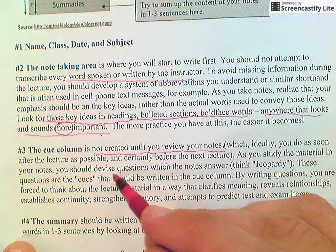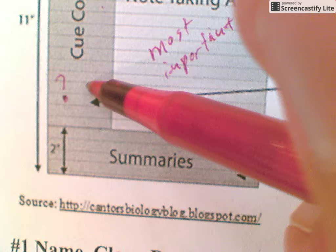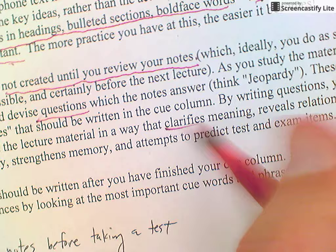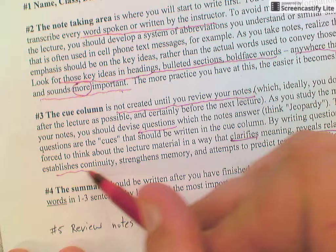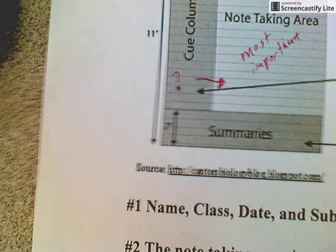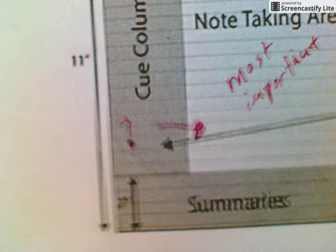As you go back through the notes, you come over to the cue column and write your questions. I might draw a little arrow to where the question relates in the notes. You might also have anything that clarifies the meaning, reveals relationships between the notes, establishes continuity with the notes, or strengthens your memory. You can also use the cue column for predicting test and exam items, and sometimes you might have a little summary or keywords over here.